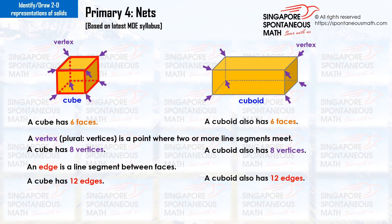A cube has 6 faces. A vertex is a point where 2 or more line segments meet. The plural form of vertex is vertices. A cube has 8 vertices. An edge is a line segment between faces. A cube has 12 edges.